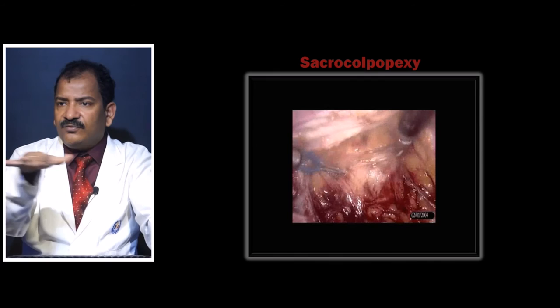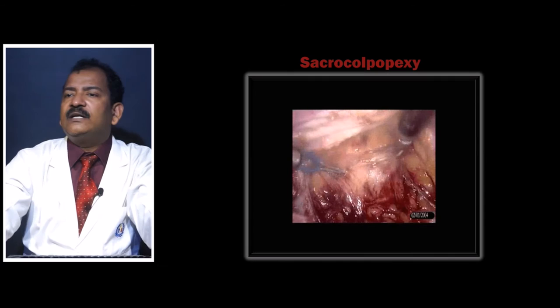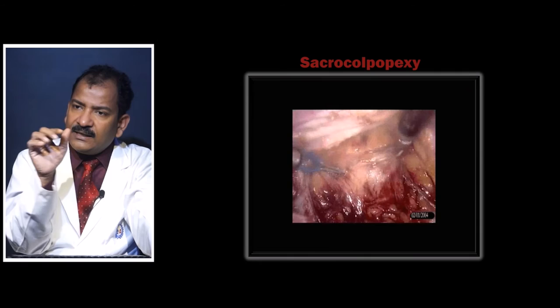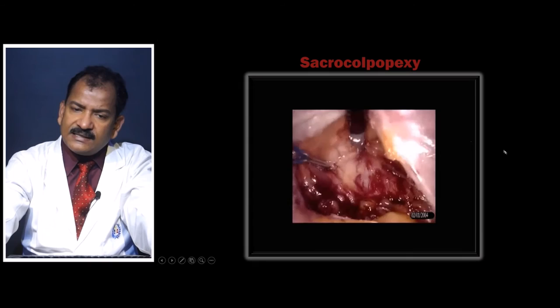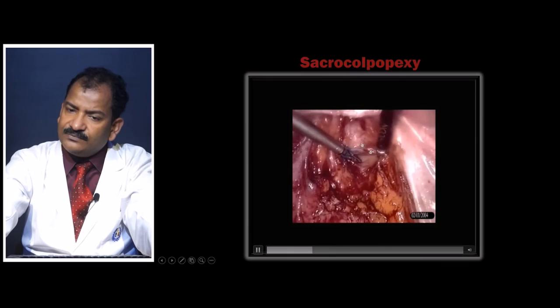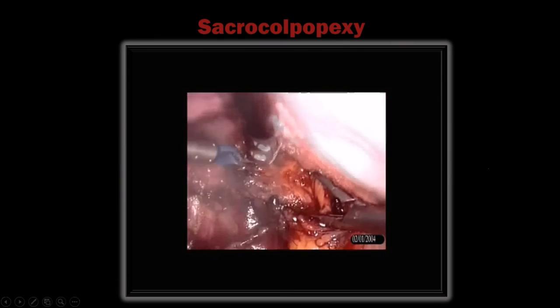A tough sheath develops anterior to the rectum, joining both levator ani muscles. Once fibrosis develops, it creates very good separation between the vagina and the rectum. That is why pararectal dissection is required — going either side of the rectum to find the levator ani muscle. If identification is difficult, the assistant can put a finger in the anus or push the levator ani vaginally for guidance.